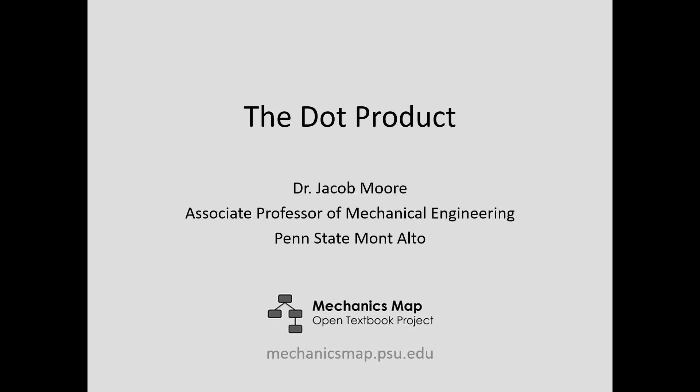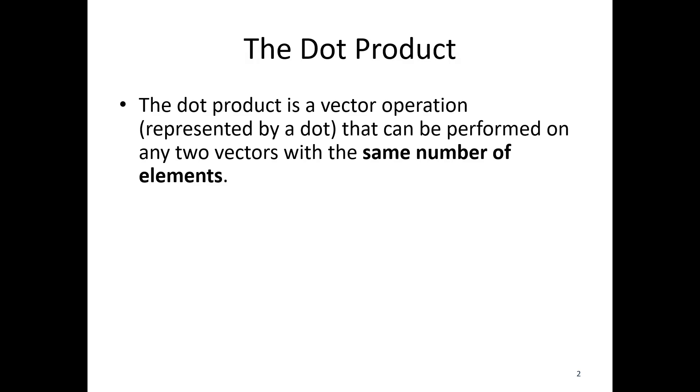Hello. For today's video lecture, we're going to be talking about the dot product. So the dot product is a vector operation, represented by a dot, that can be performed on any two vectors that have the same number of elements.